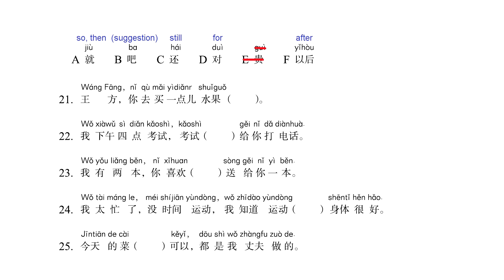Sentence number 21: 'Wǎnfàn, nǐ qù mǎi yì diǎr shuǐguǒ' — blank. Translation: 'After dinner, you go buy some fruit.' Here we use the particle letter B, 'ba', for suggestions: 'nǐ qù mǎi yì diǎr shuǐguǒ ba.' Correct answer is letter B.